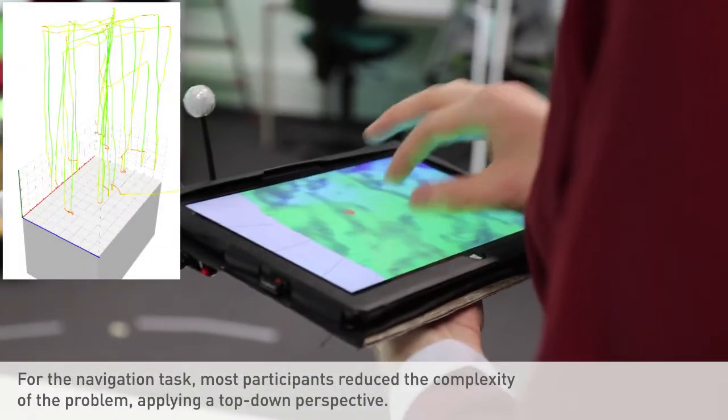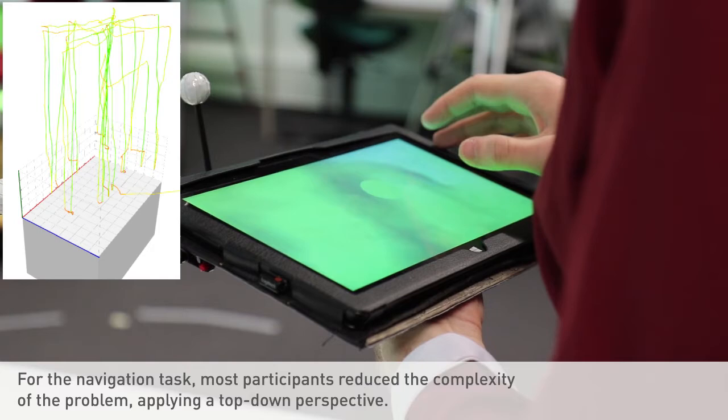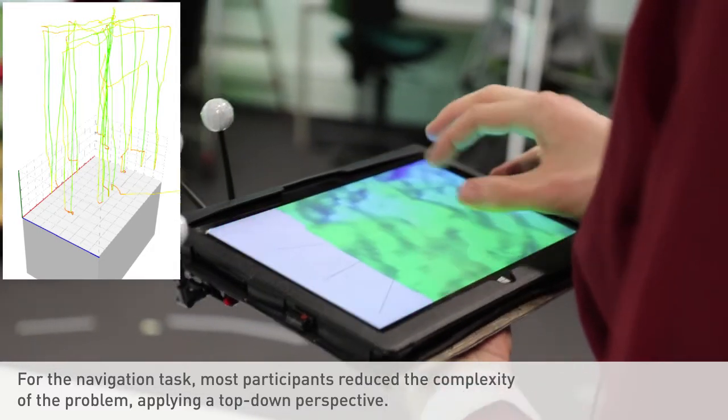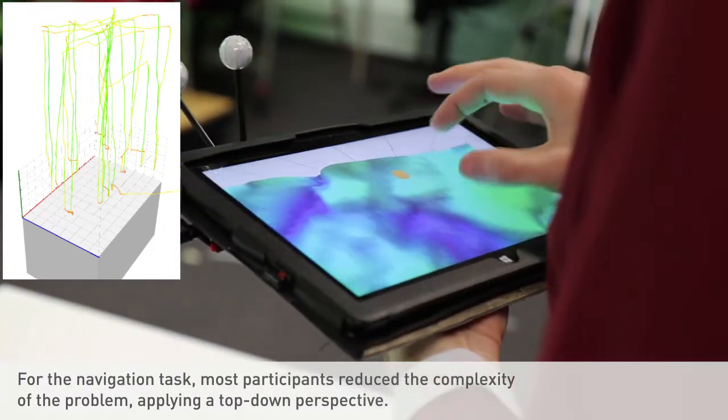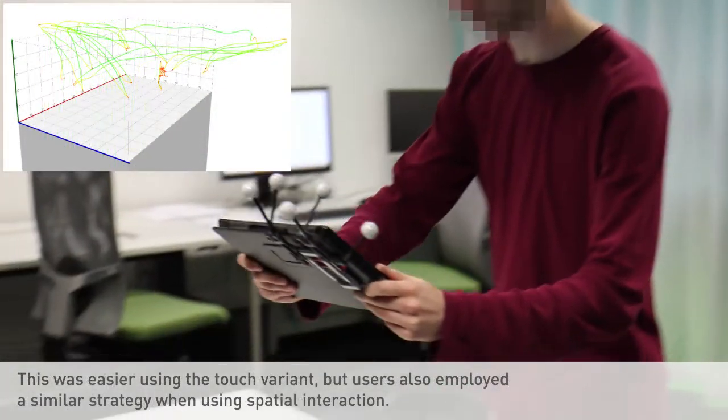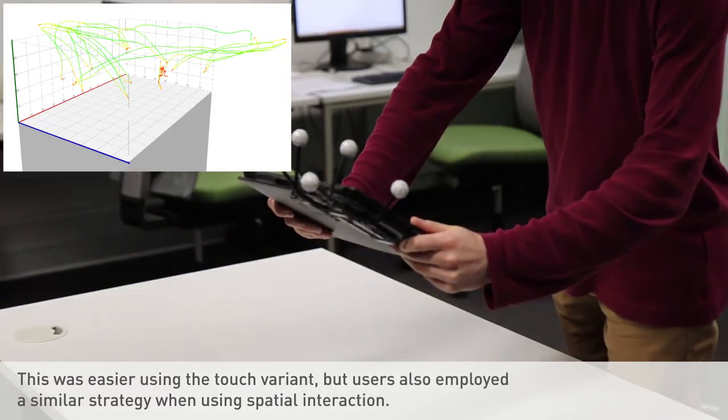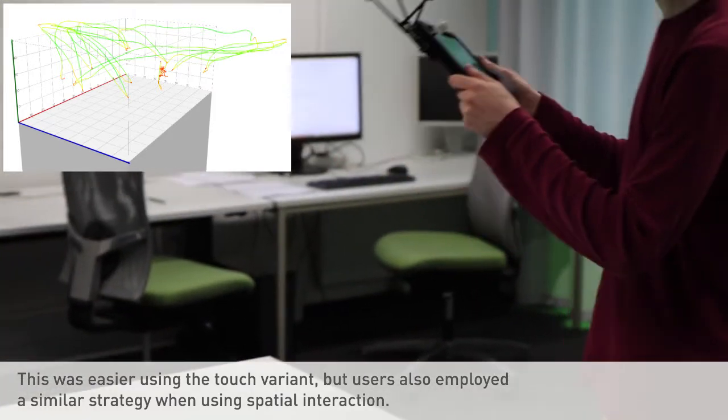For the navigation task, most participants reduced the complexity of the problem, applying a top-down perspective. While this is easier in the touch variant, users employed a similar strategy with spatial interaction as well.